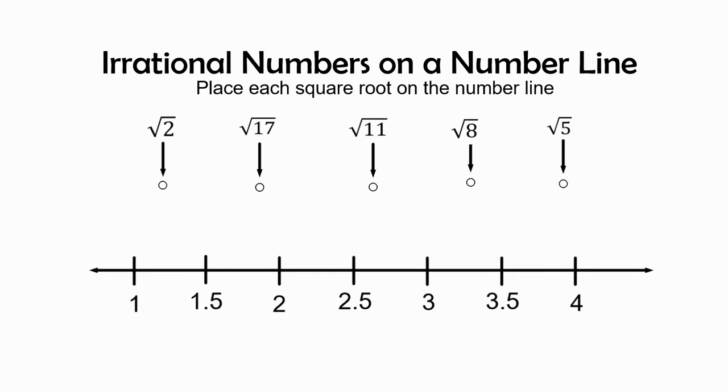Our objective is to place radical 2 (or square root of 2), square root of 17, square root of 11, square root of 8, and square root of 5 all on the number line.